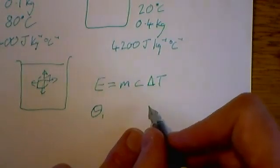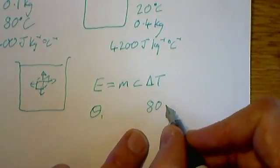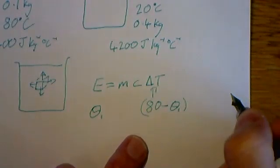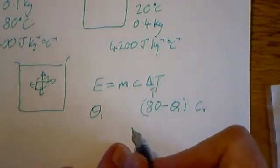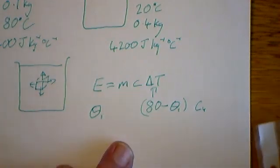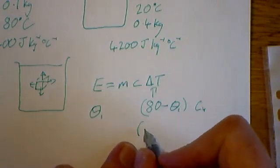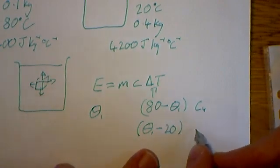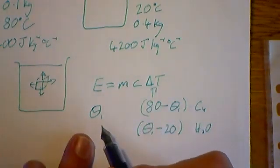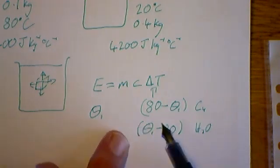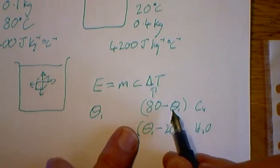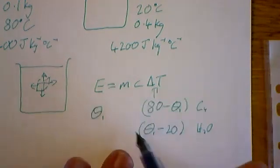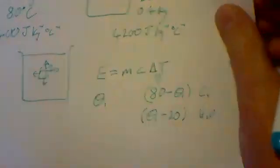Our temperature change for the copper, it started at 80 degrees and it's going to finish at theta one. So that's going to be our temperature change for the copper. Likewise, our water is going to warm up, so our water will have the temperature change theta one take away 20. For instance, if theta one ends up at 30 degrees, then our copper will have dropped by 80 take away 30, will drop 50 degrees. Likewise, if this is 30, the water will have raised temperature by 10 degrees. So these represent our temperature change. Now we just have to use this equation.